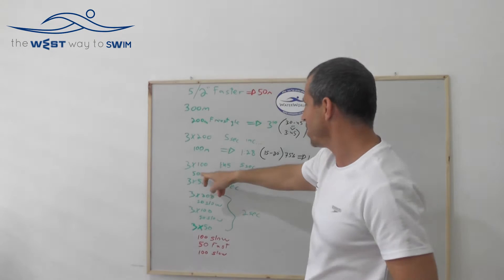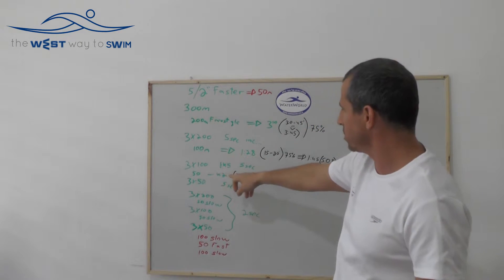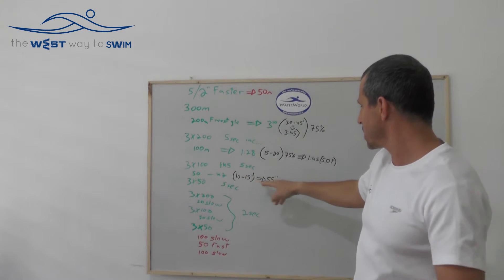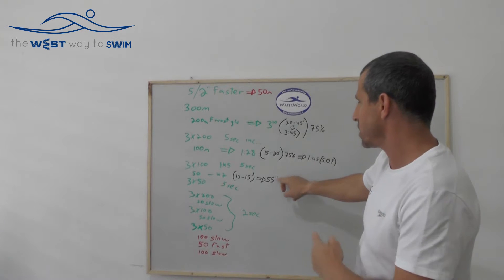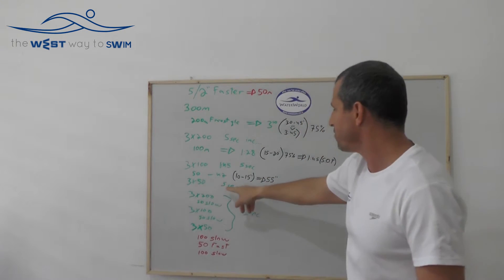Afterwards 50 meters. We're going to control the pace of 75%. 50 meters let's say you did 42. 10 to 15 seconds resting is 55 seconds. Your send off time exactly the same drill 3x50 with 5 seconds increasing pace.